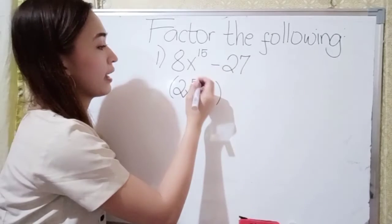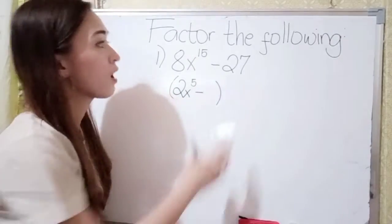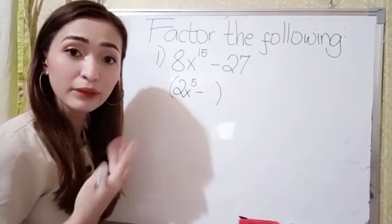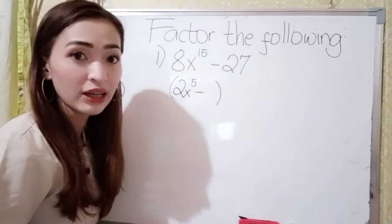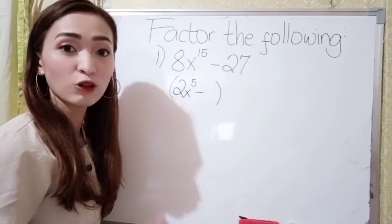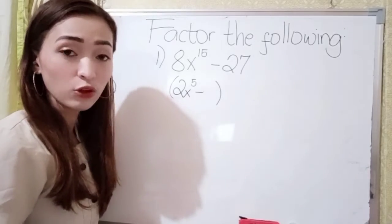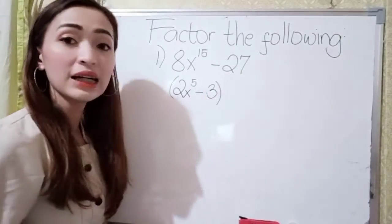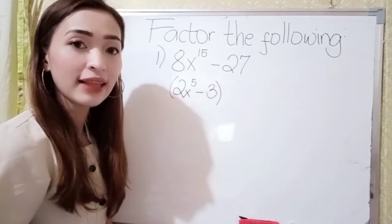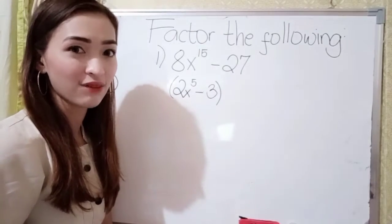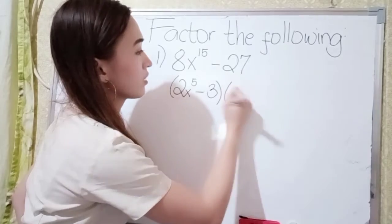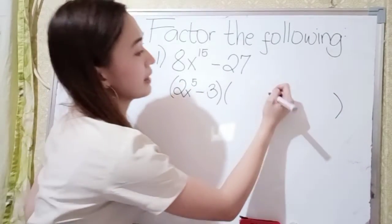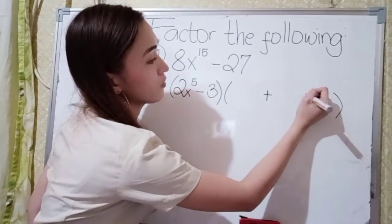This is minus here. Next, think of a number that if you multiply by itself thrice, the answer is 27. Or, what is the cube root of 27? The cube root of 27 is 3, because 3 times 3 is 9, and 9 times 3 is 27. If this is negative, so put a positive sign here and also here.